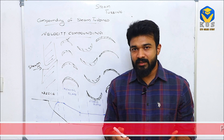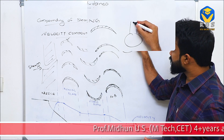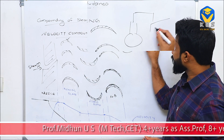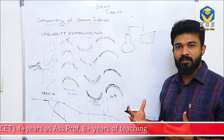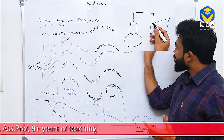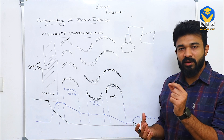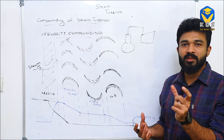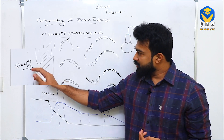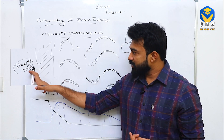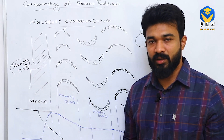In the Rankine cycle, from a high-pressure boiler, steam is given to a turbine. This very high-pressure steam comes into the turbine. Before the turbine, there is a nozzle. What happens inside the nozzle — this steam inlet is coming from the boiler at very high pressure and high temperature.